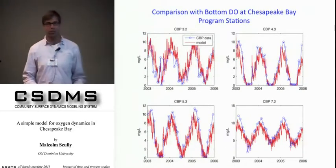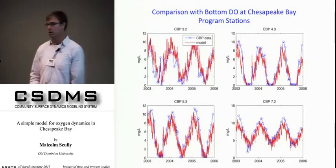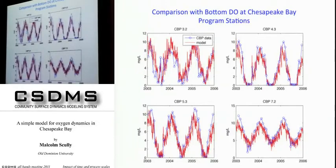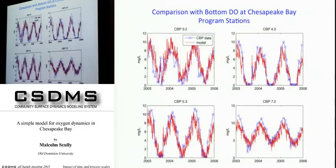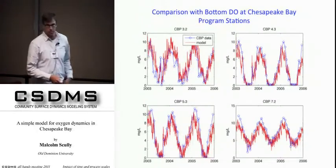I want to show that this model with essentially constant biological processes can represent the seasonal cycle of hypoxia in the bay reasonably well. These are Chesapeake Bay Program observing stations from upper bay moving south to lower bay, showing a three-year simulation of bottom dissolved oxygen. Blue circles are observed data; the red line is the model prediction. The model with no biological variability gets a nice seasonal cycle of oxygen dynamics. It even captures events like the big wind mixing event in August 2003. The model shows remarkable skill given that there's no biological variability at all.